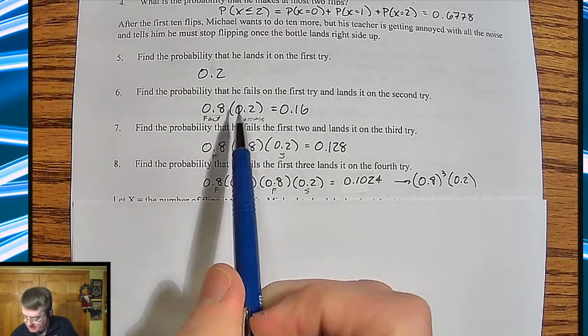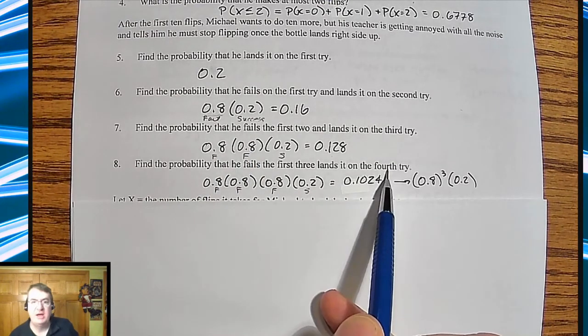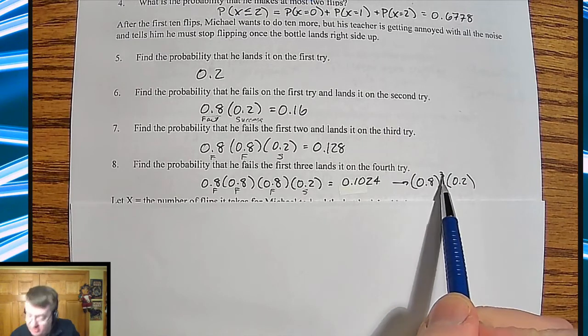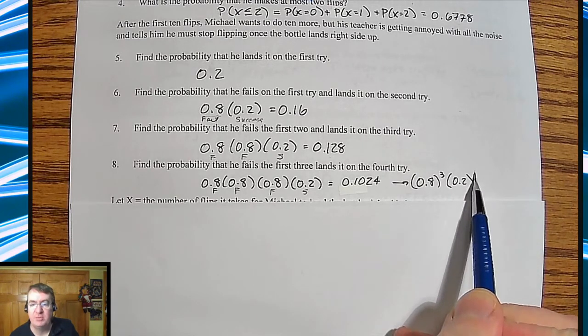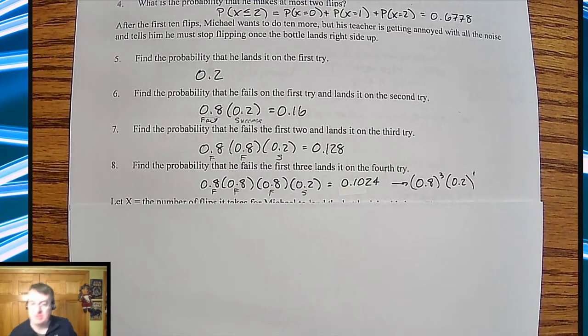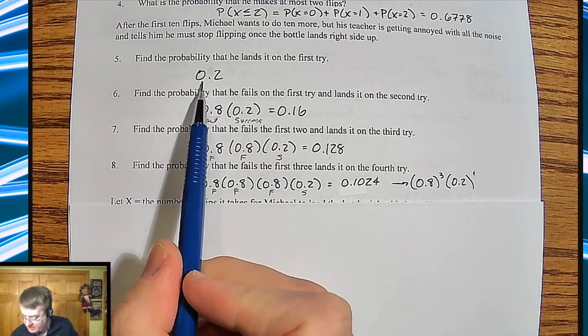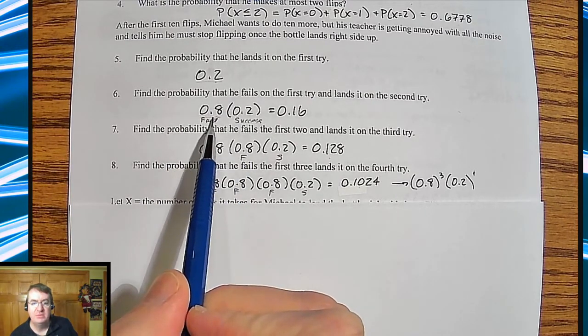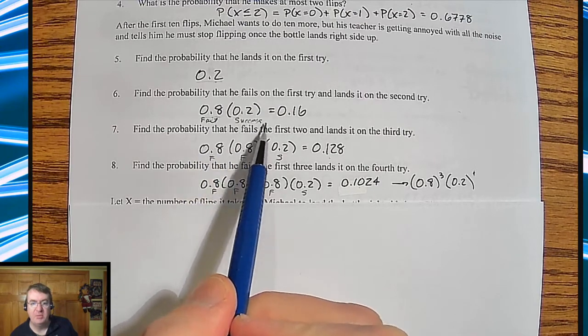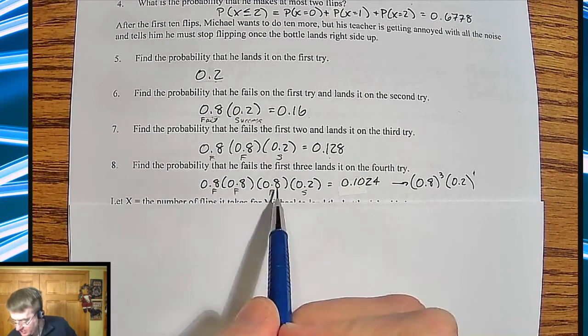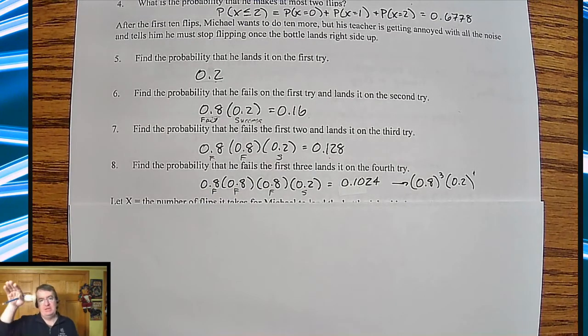The pattern that you should be seeing is that obviously if we're talking about four tries, the first, that means you have to fail one less than that. And that's what comes up over here. So you get 0.8 to the third power times 0.2 to the first power because you only are going for the one success. The other thing to notice here is notice how these are going down. And if you think about it, you're multiplying this 0.2 by a number that's less than one. So it is going to go down. It's a declining probability that it's going to take additional throws.